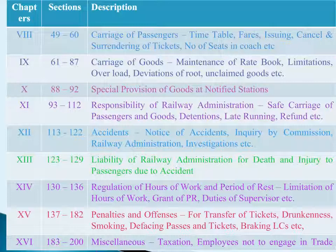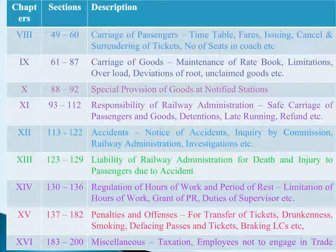Chapter 11: Responsibility of Railway Administration has twenty sections, Sections 93 to 112. These cover goods to be loaded, delivered, delay or detention, traffic passing over railways, goods carried at owner's risk, responsibility for carrier luggage, application for compensation for loss, etc.